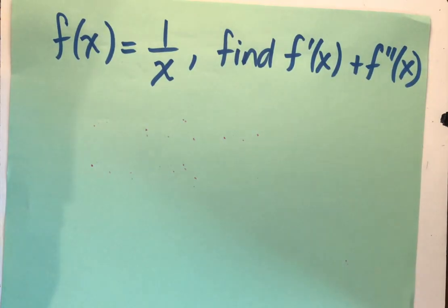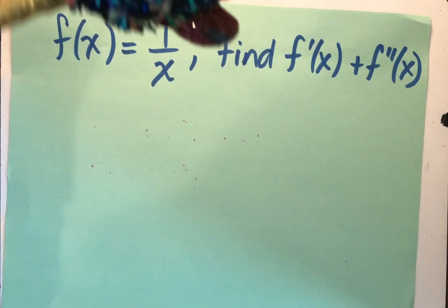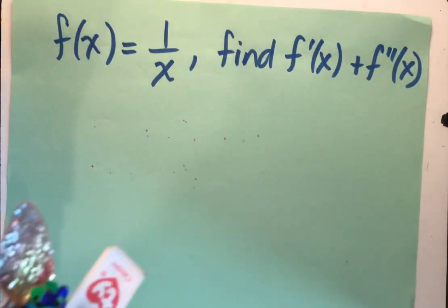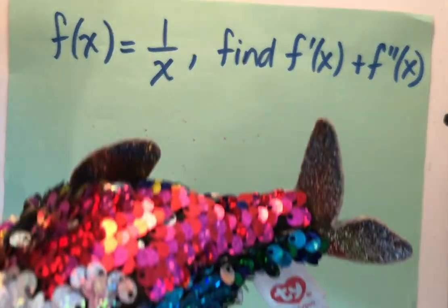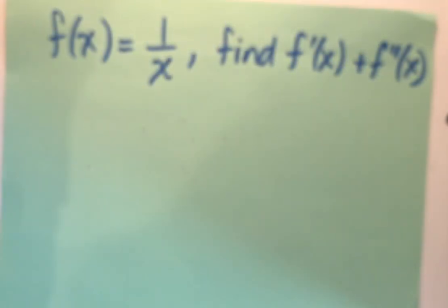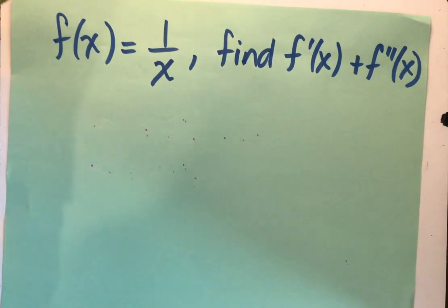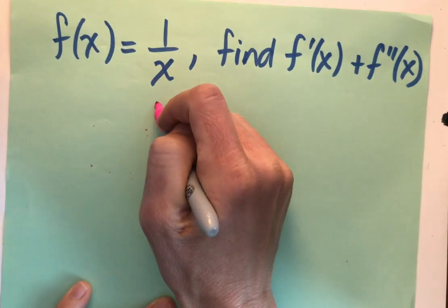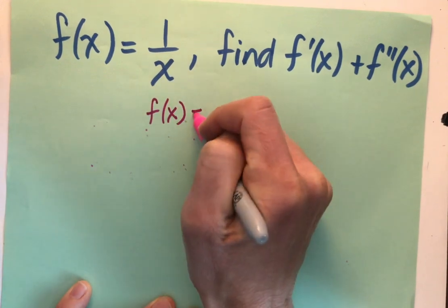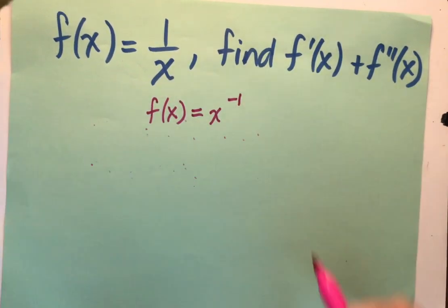The next example, something we haven't seen before, f of x equals 1 over x. Find the first and second derivatives. Ooh, this feels a little scary. I feel like I'm in the ocean swimming with the sharks. Not sure what to do. Let's think about this for a minute. Ah, why not write 1 over x so it's written as an exponent? Genius. 1 over x is just x to the negative 1 power.